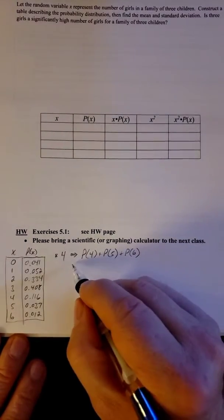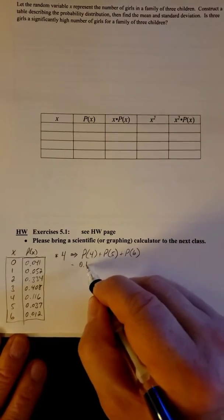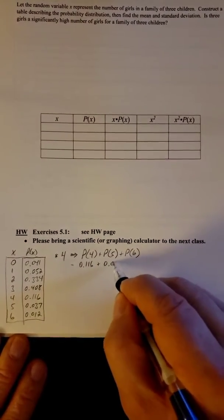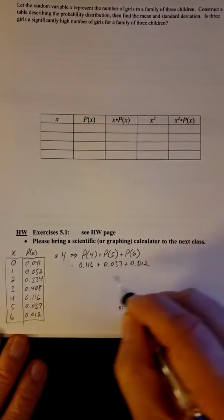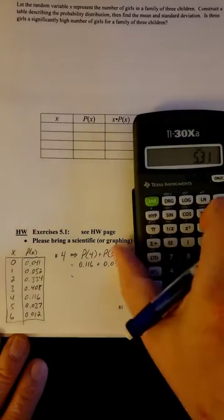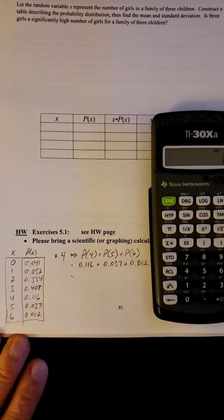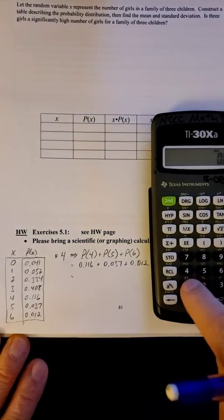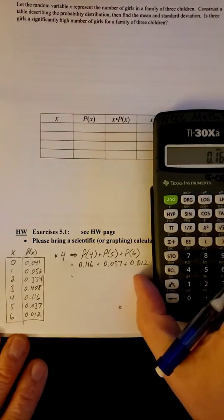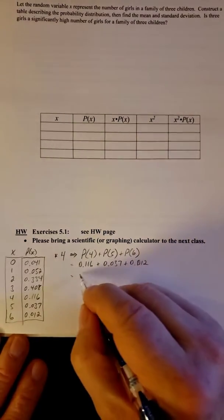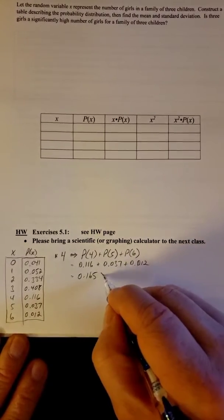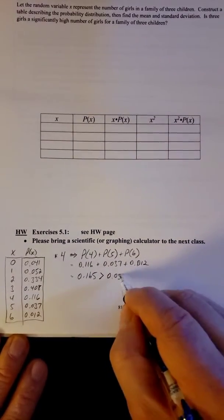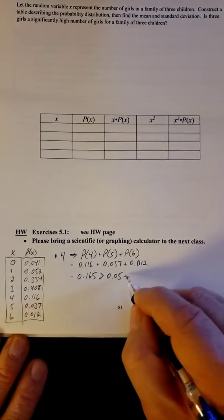So if we go to our table and just add those up, we're going to get 0.116, 0.037, and 0.012, which gives us 0.116 plus 0.037 plus 0.012. So now compare that to 5%. It's way too big. It's much bigger than 5%, so the answer is no.